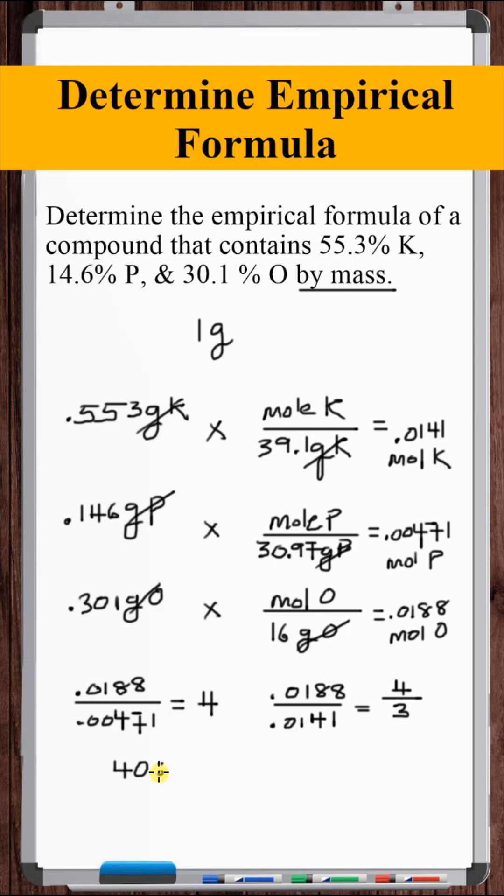So for every four oxygen atoms, we have one phosphorus atom, and for every four-thirds oxygen atoms, we have one potassium atom. If we multiply this by three, we have four oxygen atoms for every three potassium atoms. So the compound is K3PO4.